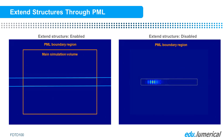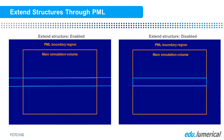Typically, extending structures through the PML is desired. However, the following cases are examples of when you don't want to automatically extend the structure through the PML. If you have an object which is angled, the simulated object will be extended in the direction perpendicular to the PML, so it changes the structure that is simulated from the actual structure. In this case, you should turn off the Extend Structure Through PML option and make sure that the structure extends all the way through the PML region.